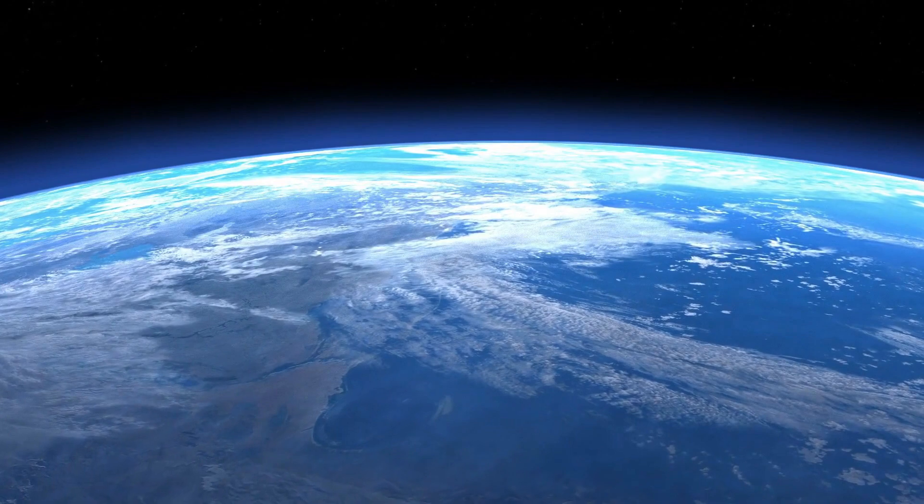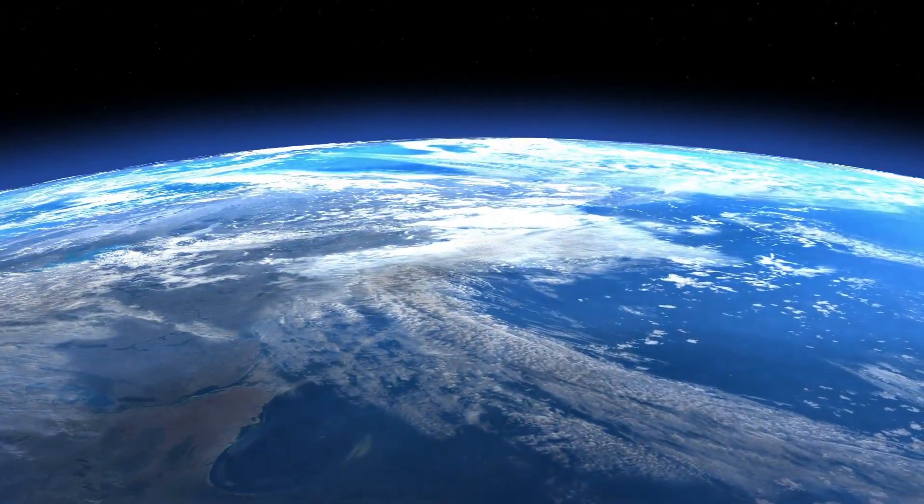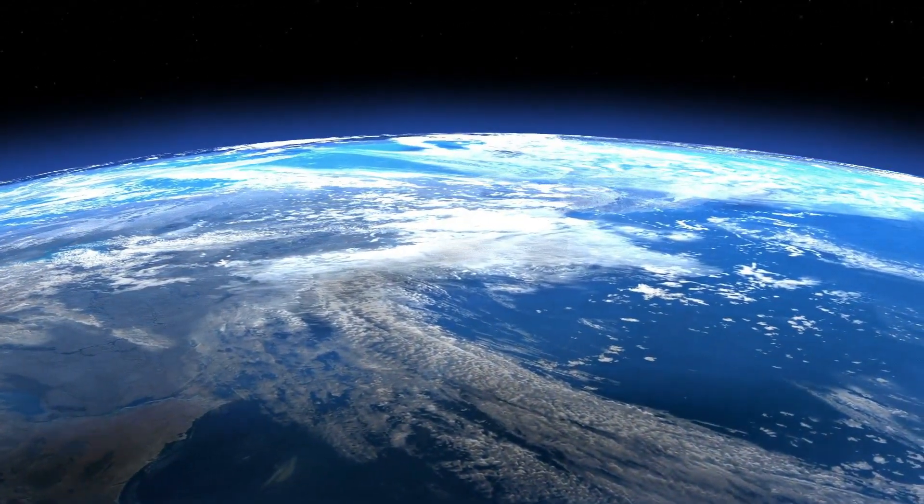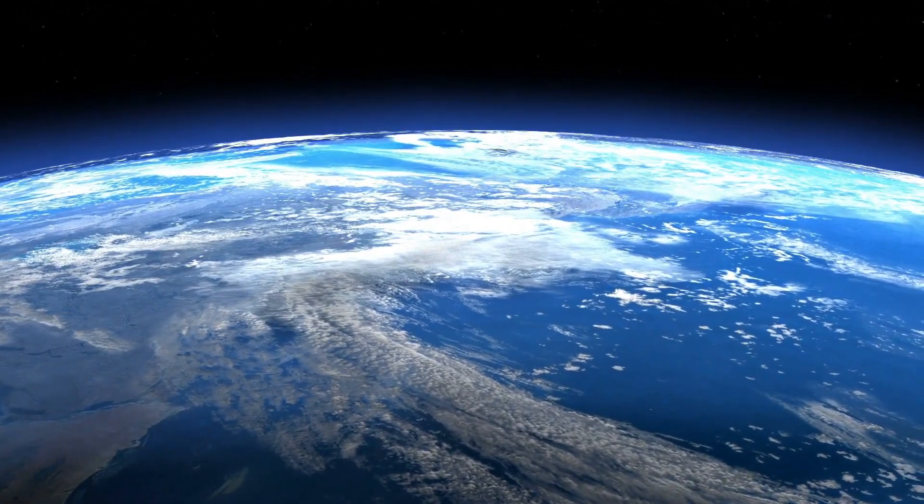An exoplanet must be older, larger, warmer, wetter, have higher amounts of oxygen, and have a longer surviving star for life to exist on it.